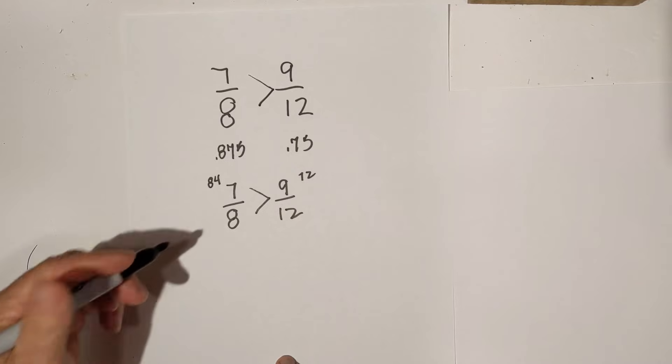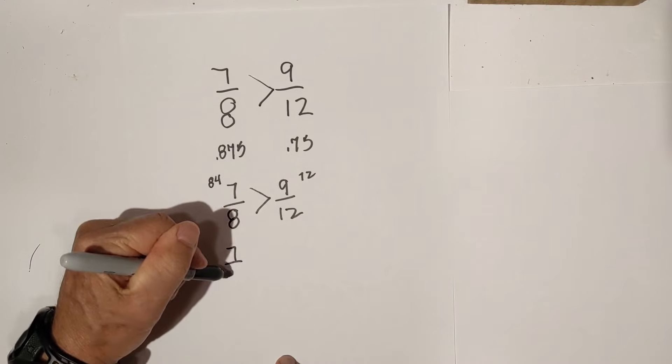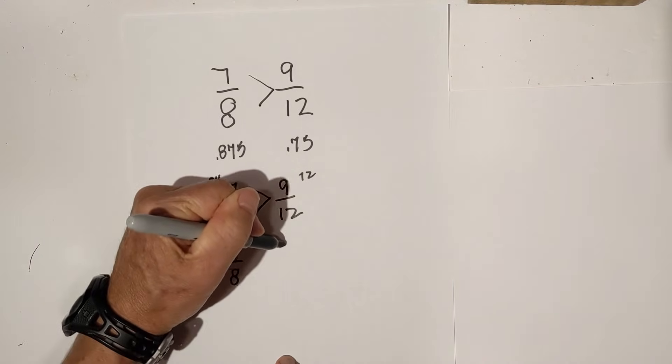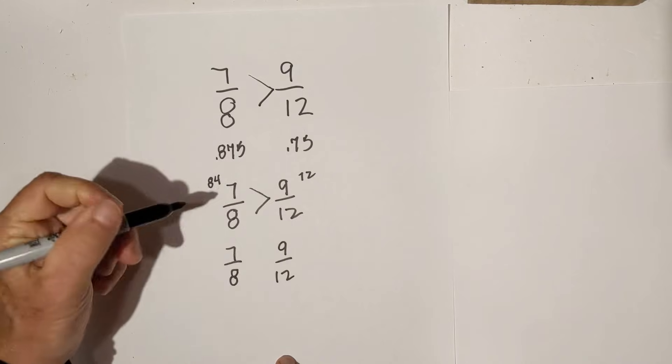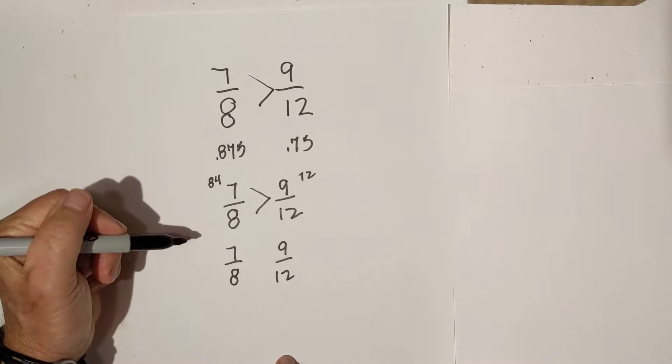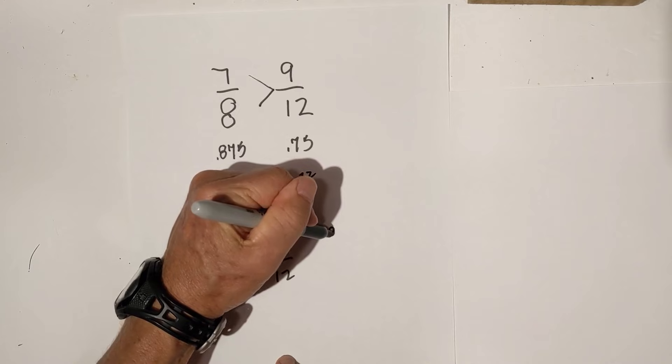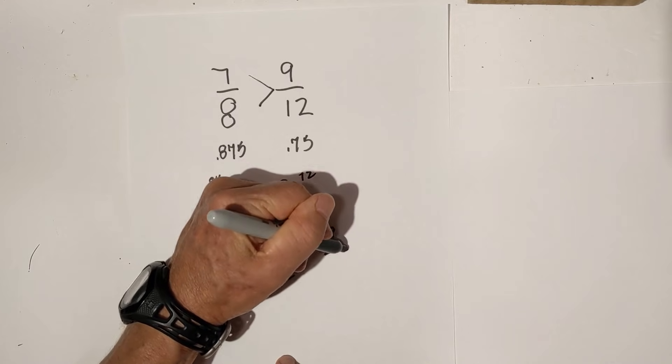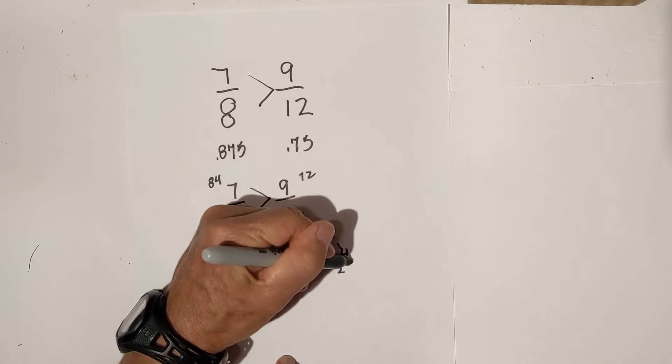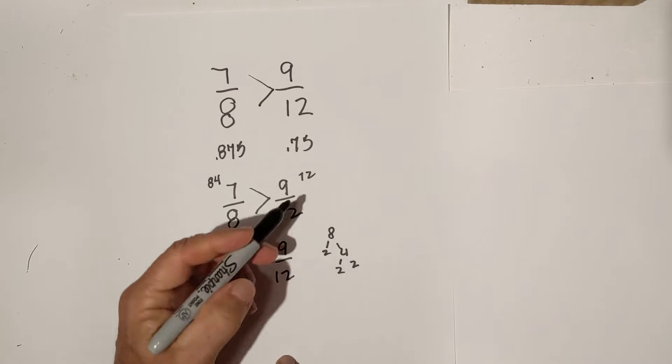And the last one, you can find a common denominator. I like to use a factor tree. So, I'm going to factor 8 is 2 and 4 equals 8 and then 2 and 2. I'm down to prime numbers.